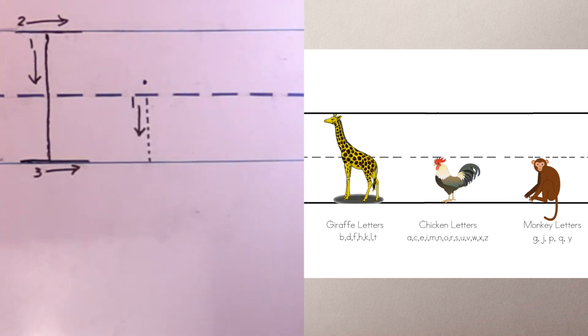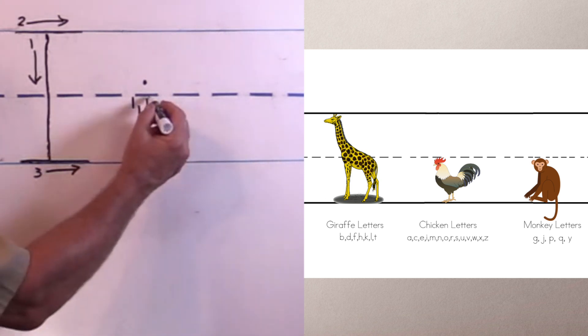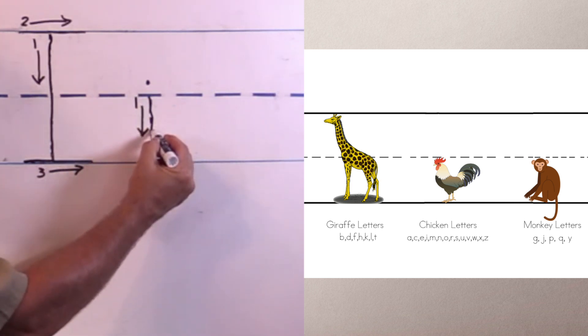Okay, lowercase I. That is the chicken letter. So I'm going to start right here in the middle, and I'm going to go straight down and stop at the bottom.